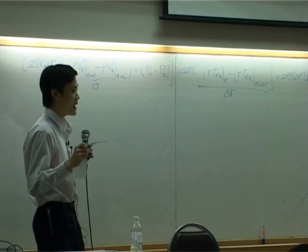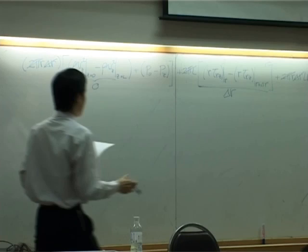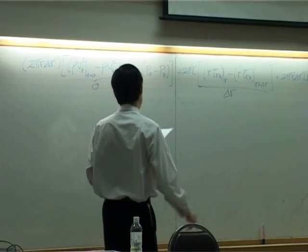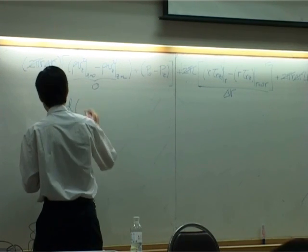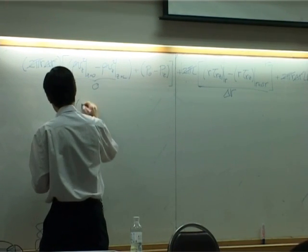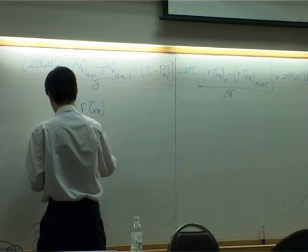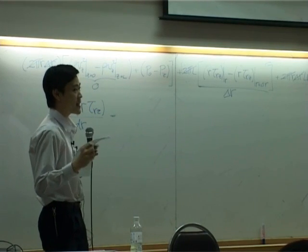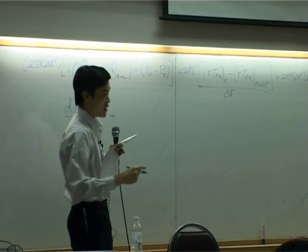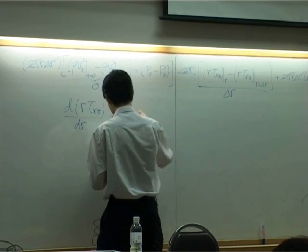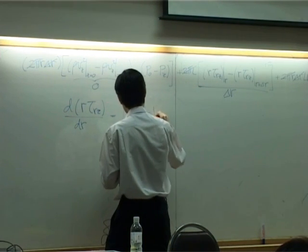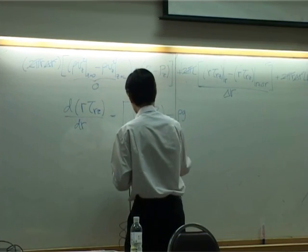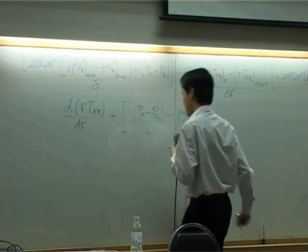Then taking limit delta r approaching zero. This term can go over to the right-hand side. And then it will become differential. In fact, the equation should look exactly the same, except the sign of g that will be reversed.